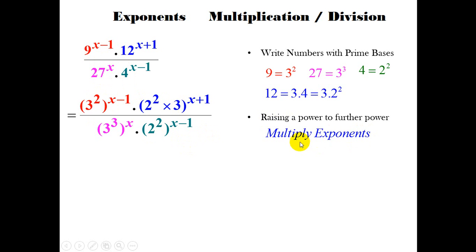Now if we implement the rule, we would have 2 times x is 2x, 2 times minus 1 is minus 2. Taking the power 2 times x plus 1 will give us 2x plus 2. The number 3 has the power of 1, and 1 times x plus 1 is x plus 1.